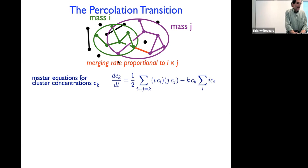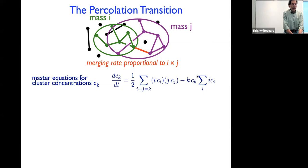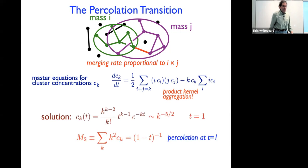The master equation for cluster concentrations with merging rate IJ should look familiar — there's a gain term proportional to IJ c_I c_J summed over I+J=k, and a loss term k c_k times ∑ I c_I. The generating function technique can be used to solve this equation — it is solved in textbooks, though it's more advanced than the constant-kernel case. Let me just write down the solution.